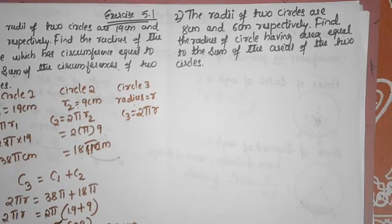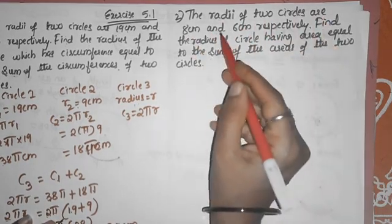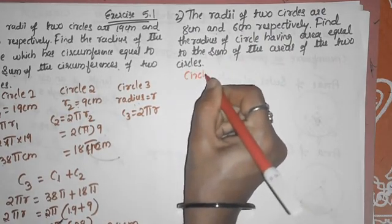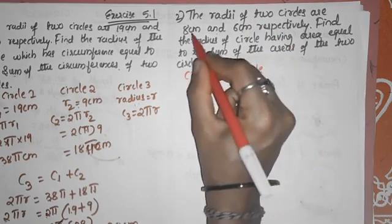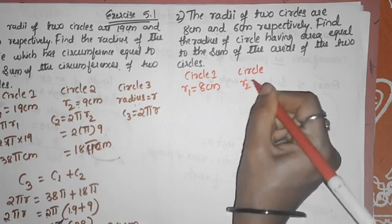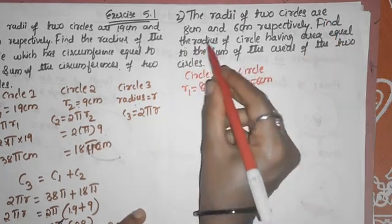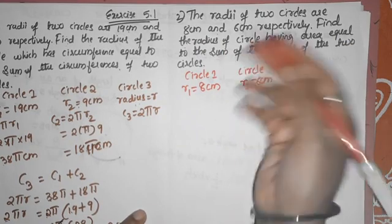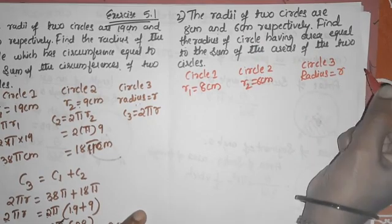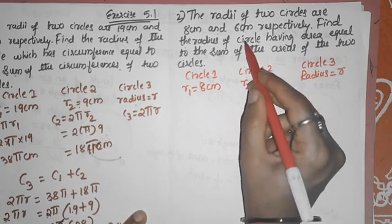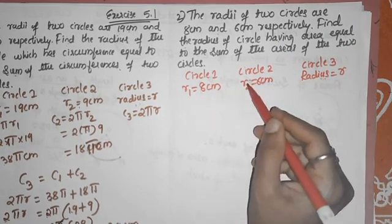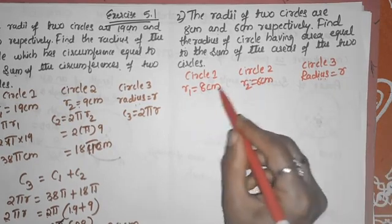Second question: the radii of 2 circles are 8 cm and 6 cm respectively. They have given 2 circles. The radius of the first circle r1 is 8 cm, second circle r2 is 6 cm. Find the radius of the third circle — I take radius as r. The third circle has area equal to the sum of the areas of the 2 circles.